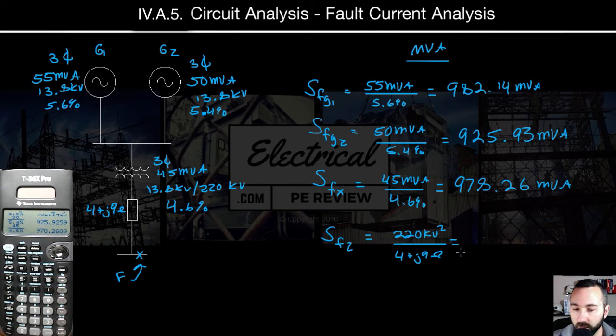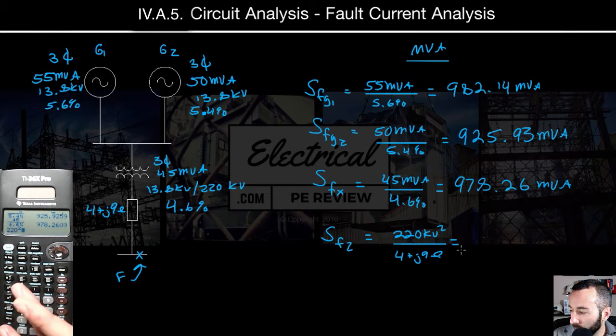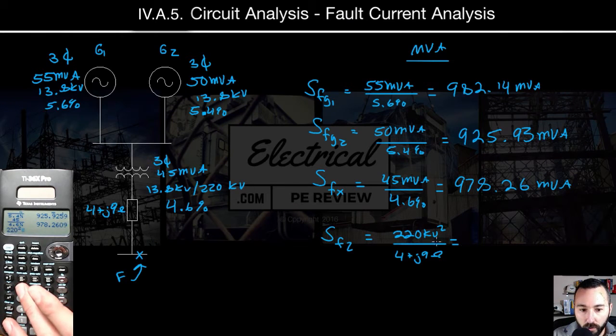Last, for that line impedance, we've got 220 kV squared. I'm not using units. So I'm going to remember that kV squared will equal to M.